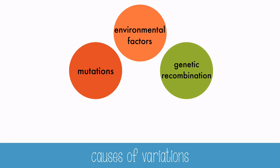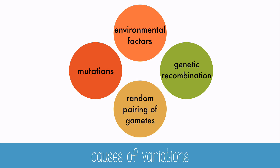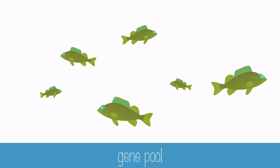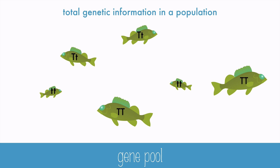Genetic recombination, which is the shuffling of genes during crossing over and independent assortment in meiosis, also causes variation. And lastly, the random pairing of gametes during fertilization — which sperm and which egg will pair up is random. All of these variations in a population make up the gene pool: the total genetic information in a population. All of the alleles in that population make up the gene pool. Each population of a species will have some differences in their gene pool, which can make a difference in how they evolve and adapt in their environments.